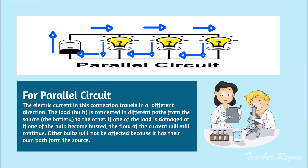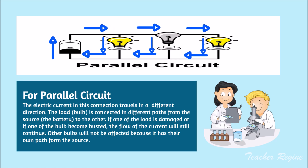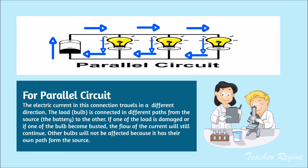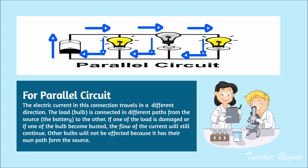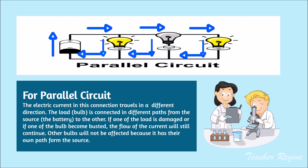For a parallel circuit, the electric current in this connection travels in different directions. The load, which is the bulb, is connected in different paths from the source, which is the battery, to the other. If one of the loads is damaged, or if one of the bulbs becomes busted, the flow of the current will still continue. Other bulbs will not be affected because each has its own path from the source.